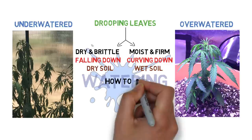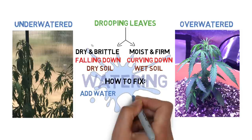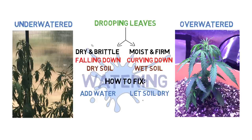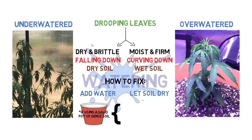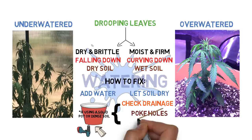The fix for an underwatered plant is simply to water it. For an overwatered plant, if you're using a fabric pot with lots of perlite, you can likely wait it out until excess water evaporates. If you're using a solid pot or dense soil, check and clear drainage holes, or drill extra holes if needed. You can also poke holes in the top of the soil for aeration — just avoid damaging roots. If possible, increase temperature and lower humidity to help water evaporate quicker, then return to normal once the soil is dry.